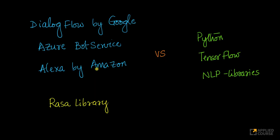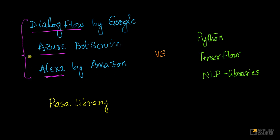In the previous sessions about building chatbots, we discussed how you can quickly build a chatbot using tools like Dialogflow from Google. Similarly, how you can use Azure Bot Service or Amazon's own Alexa. With almost little to no coding, you can build a simple but very functional chatbot using Dialogflow, Azure Bot Service, Alexa, or others that exist in the market.